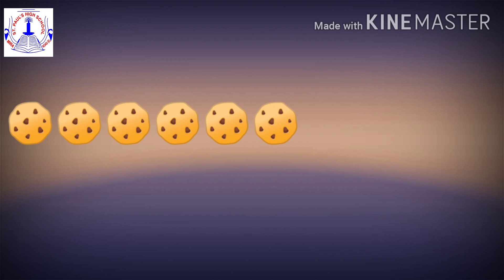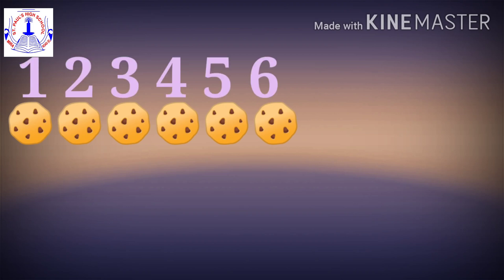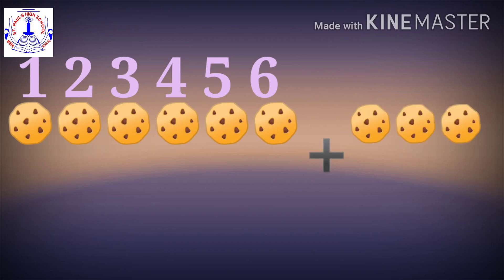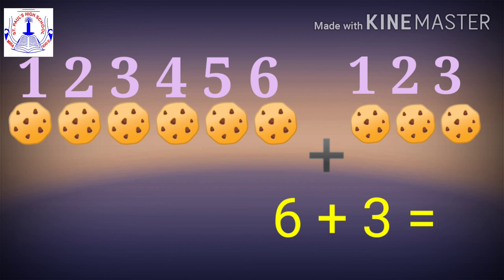Can you see these yummy cookies? Do you like cookies? Let's count how many cookies there are: one, two, three, four, five, six. There are six cookies. Now some more cookies were added — let's count them: one, two, three. Three more cookies were added. So six cookies plus three cookies: one, two, three, four, five, six, plus one, two, three — six plus three gives you nine. Six cookies plus three cookies added gives you nine total cookies.